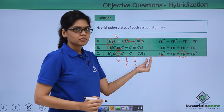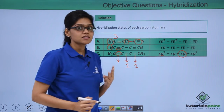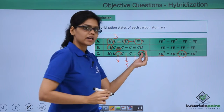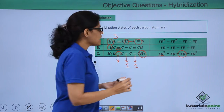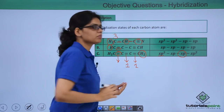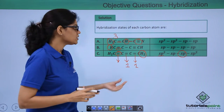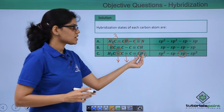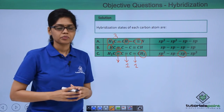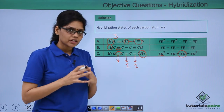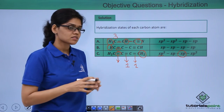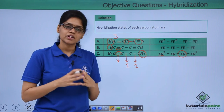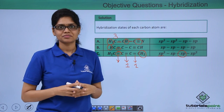The last carbon atom, however, has 3 sigma bonds — 2 from the hydrogen atoms and 1 from the double bond — so its hybridization state is SP2. I hope you are very clear on how to figure out the hybridization state of carbon atoms involved in various structures. Thank you.